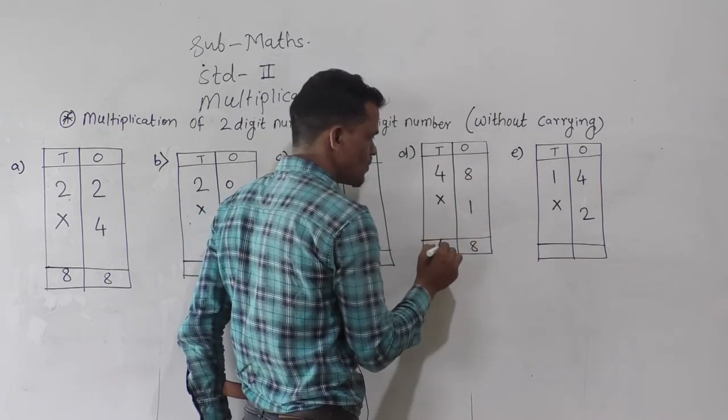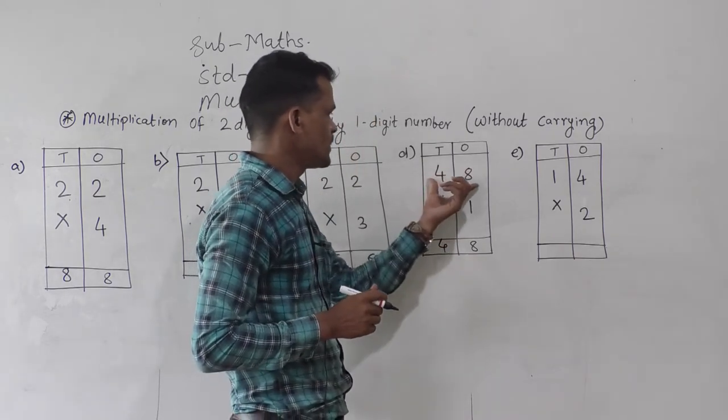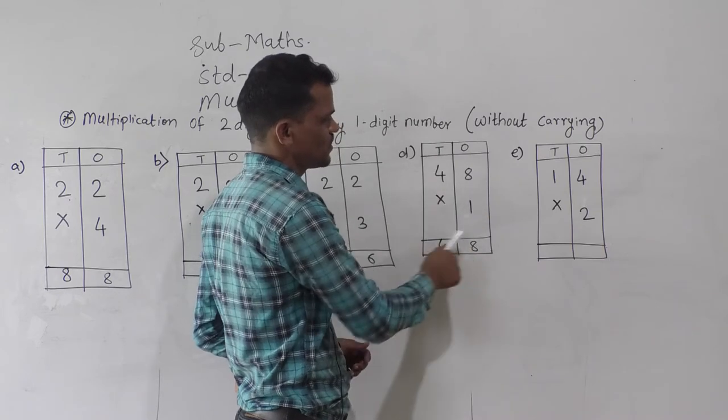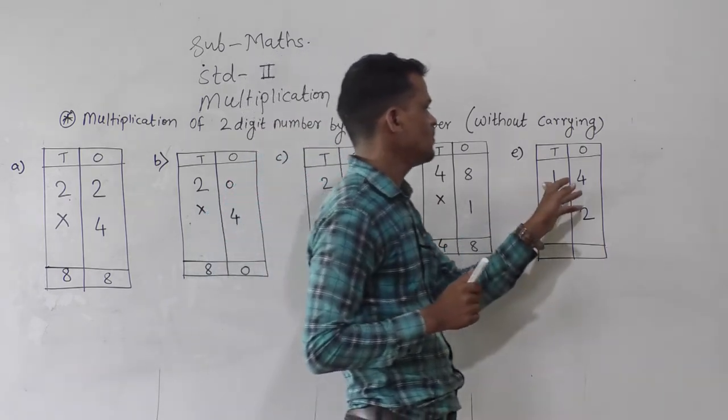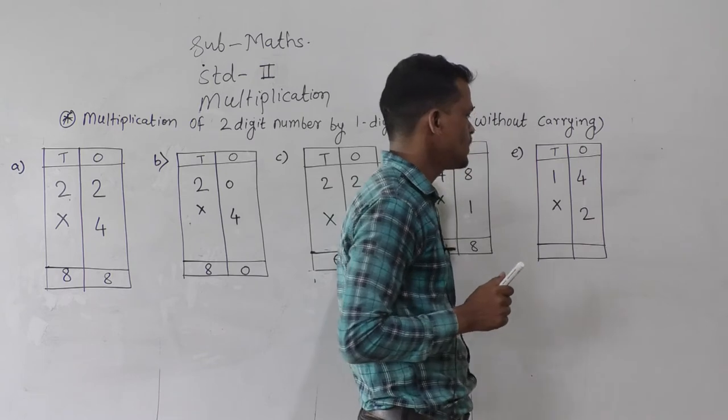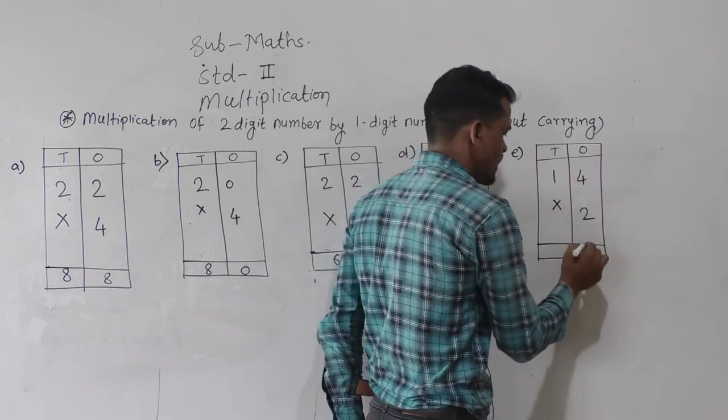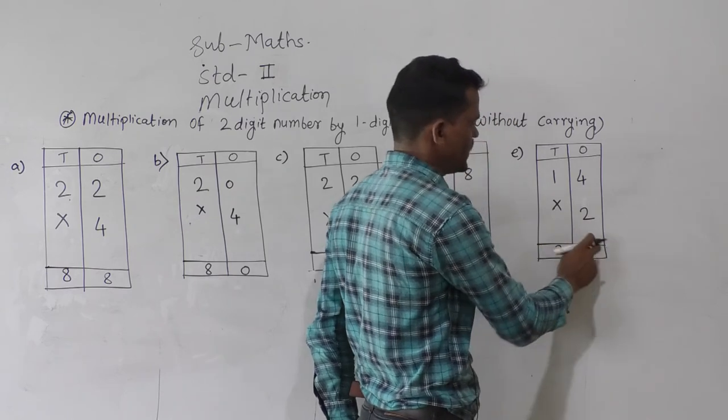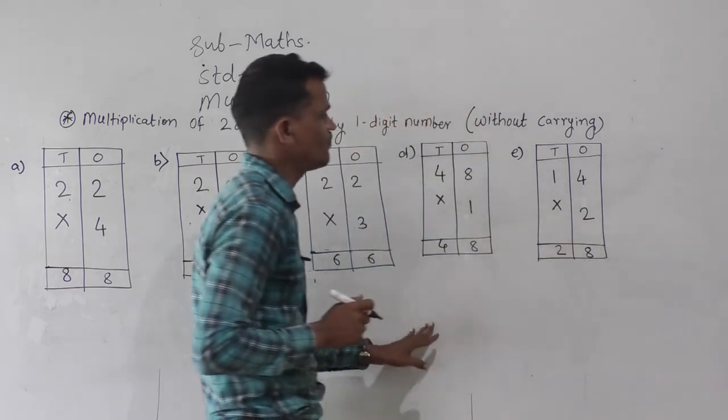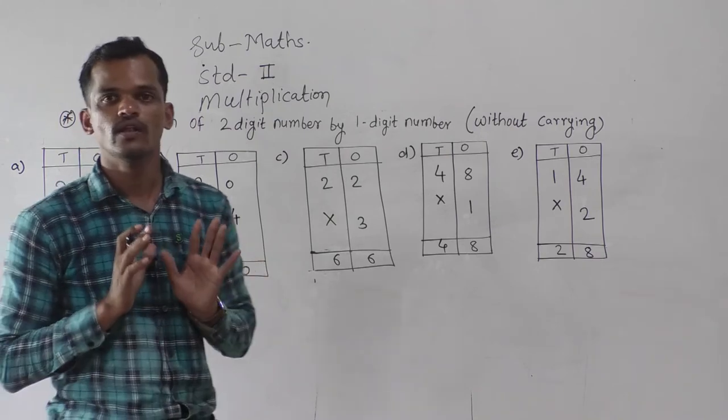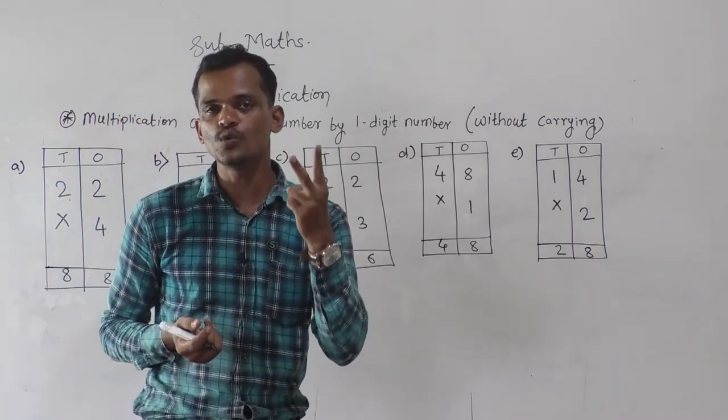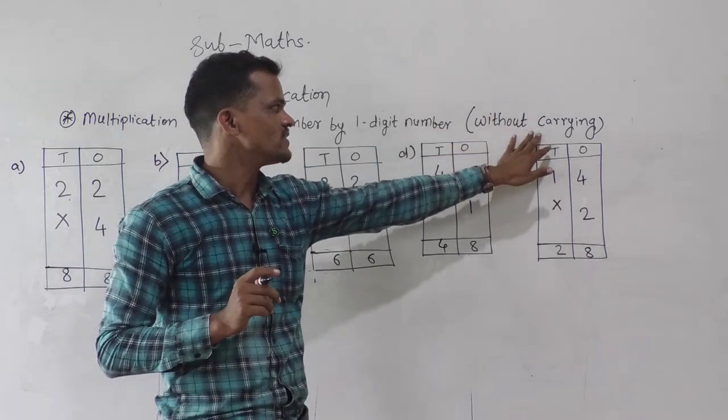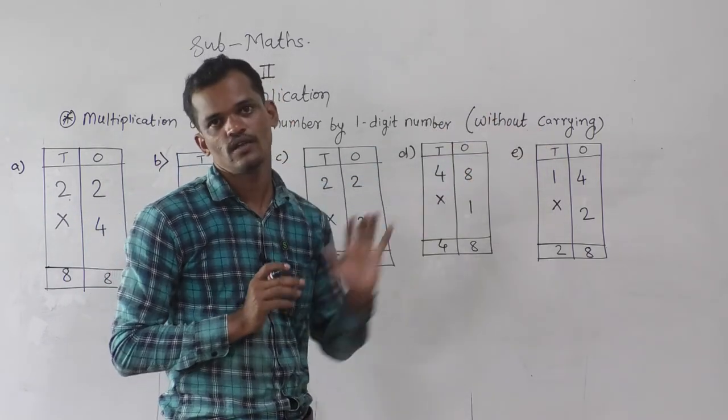Then 14 multiply by 2: 2 fours are 8, and 2 ones are 2. 28 is the answer. So today we have learned how to multiply a two-digit number by a one-digit number, and here we solved examples of multiplication without carrying.